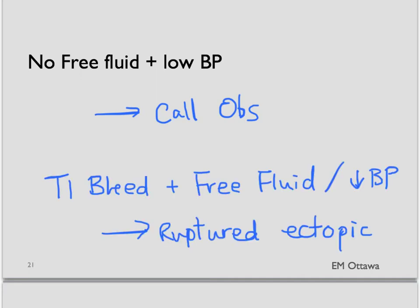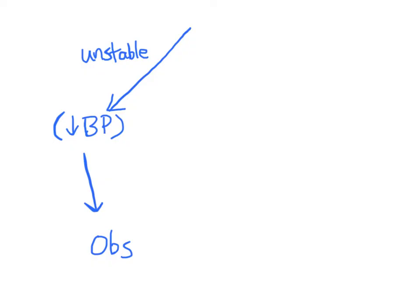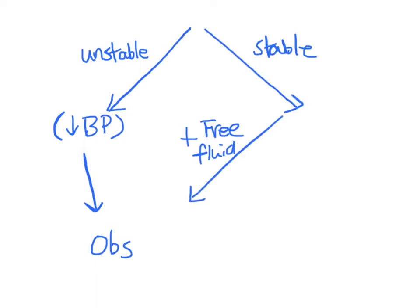Just to recap: if there is a patient in her first trimester of pregnancy and you are worried about an ectopic, either the presence of free fluid on ultrasound or an unstable patient should prompt a phone call to the consultant. In other words, unstable patient — contact consultant. Stable patient with free fluid on bedside ultrasound — also contact consultant.